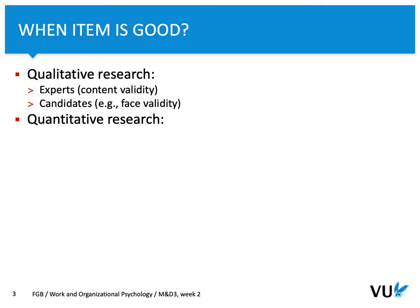On the other hand, we can perform quantitative research. We can measure, for instance, difficulty, which is usually done for capacity tests or cognitive tests. In both cases, for capacity tests and personality tests, we can test for reliability, validity, and finally discrimination, which can be seen as a part of validity where we compare and contrast groups.